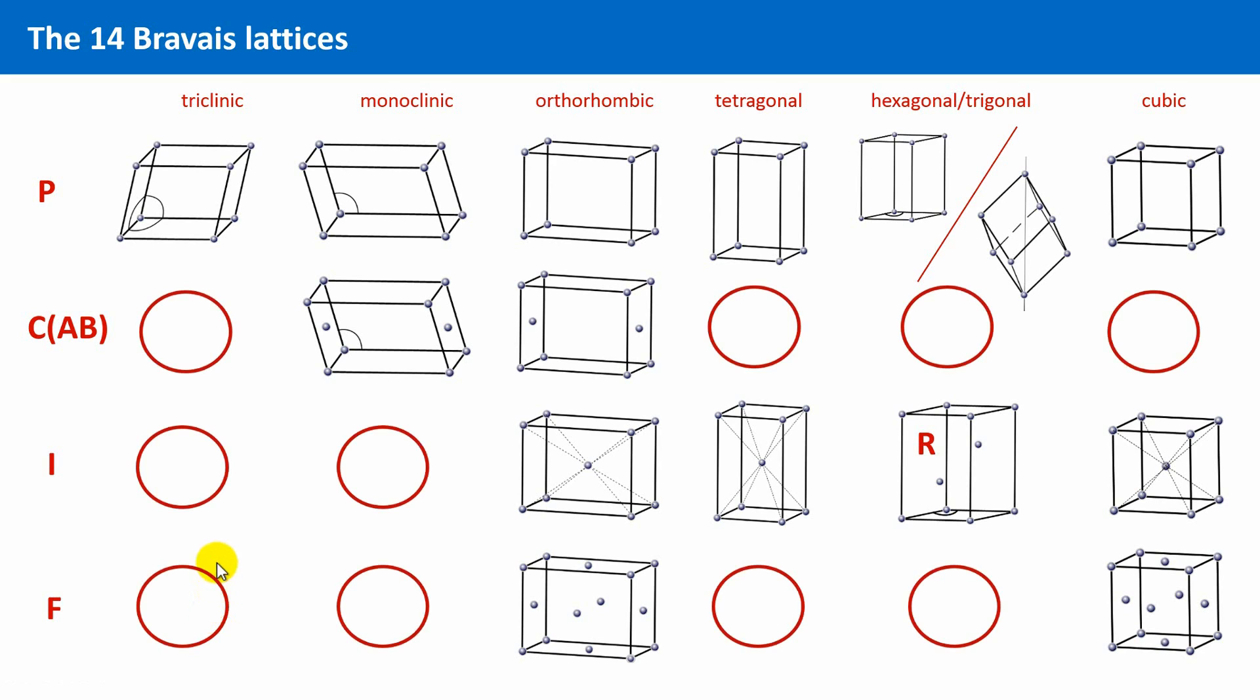For the triclinic system, for instance, only the primitive lattice or no centering exists. For the monoclinic system, the primitive and the single-side face-centered lattice types are conceivable. The orthorhombic crystal system exists in all variants of centering, and so on.